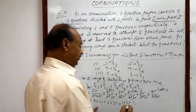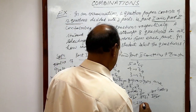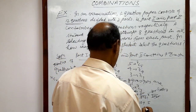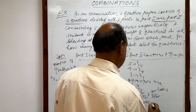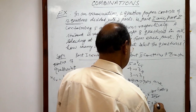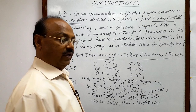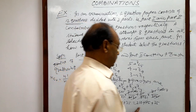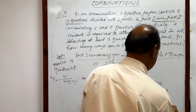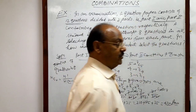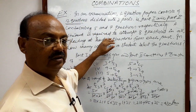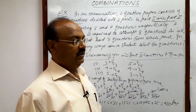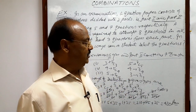Now let us compute the final result: 5C3 × 7C5 = 10 × 21 = 210; 5C4 × 7C4 = 5 × 35 = 175; 5C5 × 7C3 = 1 × 35 = 35. Adding these: 210 + 175 + 35 = 420. So a student can select the questions in 420 ways. Hope you have understood the solution — the question is very interesting!